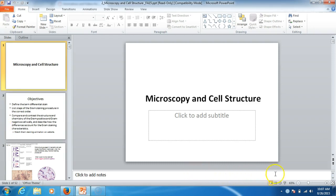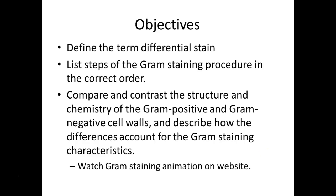Our first objective under this topic is to define the term differential stain. The gram stain is an example of a differential stain. A differential stain helps you differentiate one group from another. All differential stains have at least two colored dyes that are contrasting, and they all have a decolorization step where you remove color from one group and then the second dye applies color to that group.